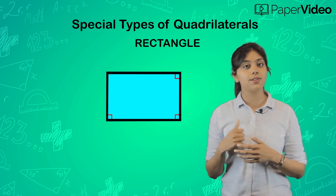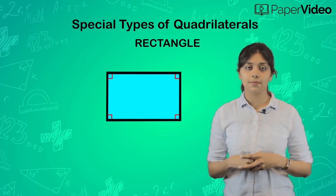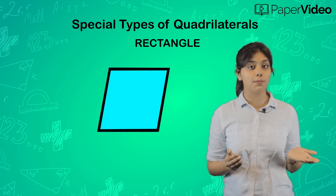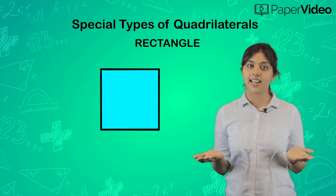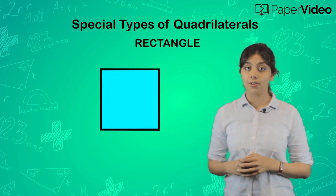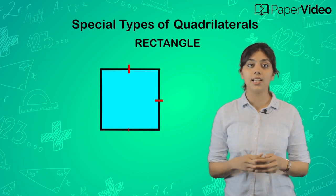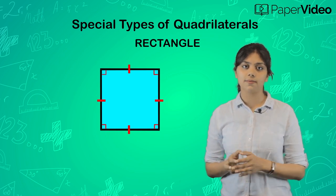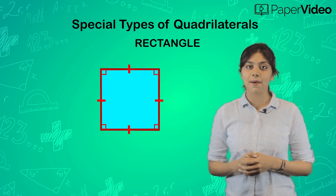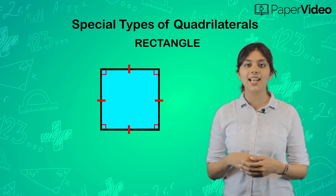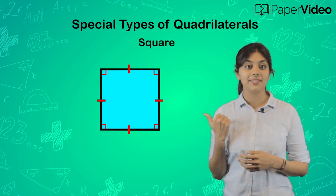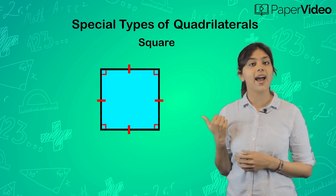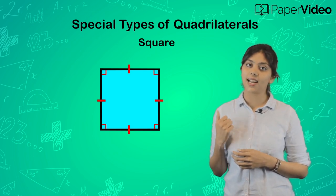Now suppose we have a parallelogram which is a combination of a rhombus and a rectangle — meaning we have a parallelogram whose all four sides are equal and all four angles are equal to 90 degrees. Then what do we call such types of parallelograms? They are known as a square. In this square, all four sides are equal and all four angles are equal to 90 degrees.